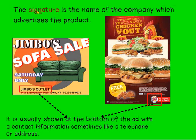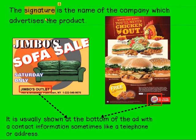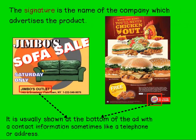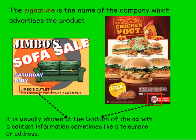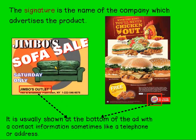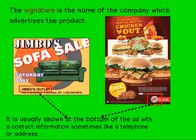The signature is the name of the company which advertises the product. For example, in this ad we have: sofa sale. So this shop sells sofas, and the name of the shop is here — Jimbo's Outlet. And also the signature sometimes gives you information about the telephone, so where you can contact them, and also the address where you can find them — Broadway, Plain Town, New York. So this is the street.